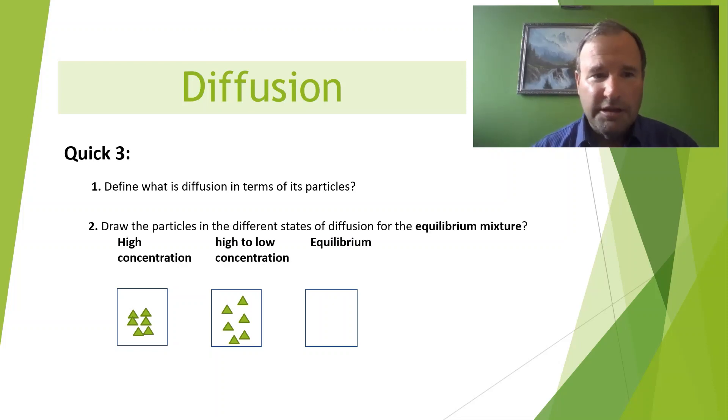Question two. Here we've got a diagram here. You can see three diagrams. One here. There's the second and there's the third. Draw the particles in the different states of diffusion for the equilibrium mixture. So for this one here, I want you to show me what's happened to the particles after it's reached its equilibrium state.